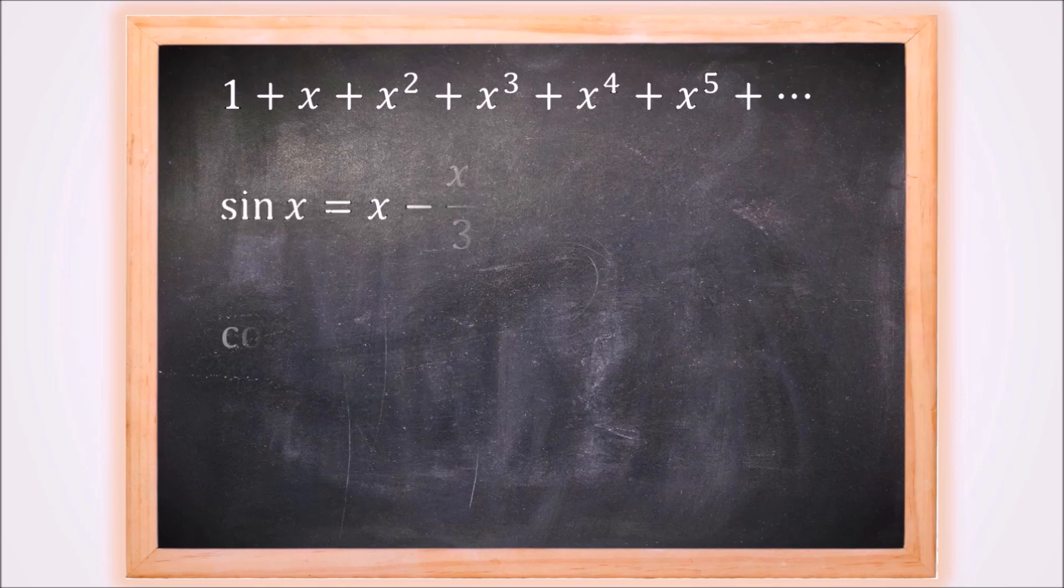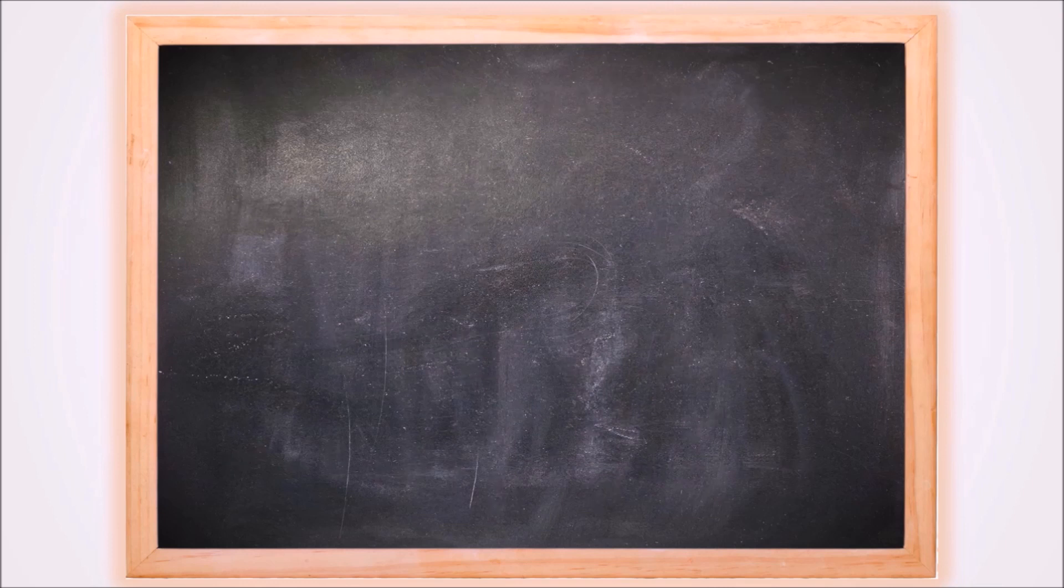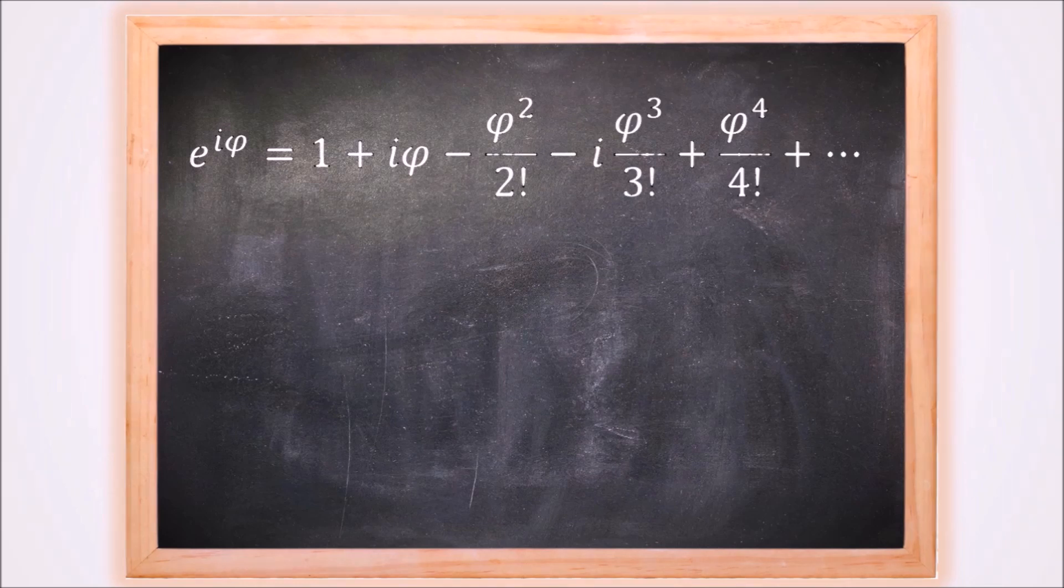Fact is that sine of x and cosine of x are also expressible as a power series. And there is another one. E to the power of x. Euler took that last one and used it to write E to the power of i times phi as a polynomial.